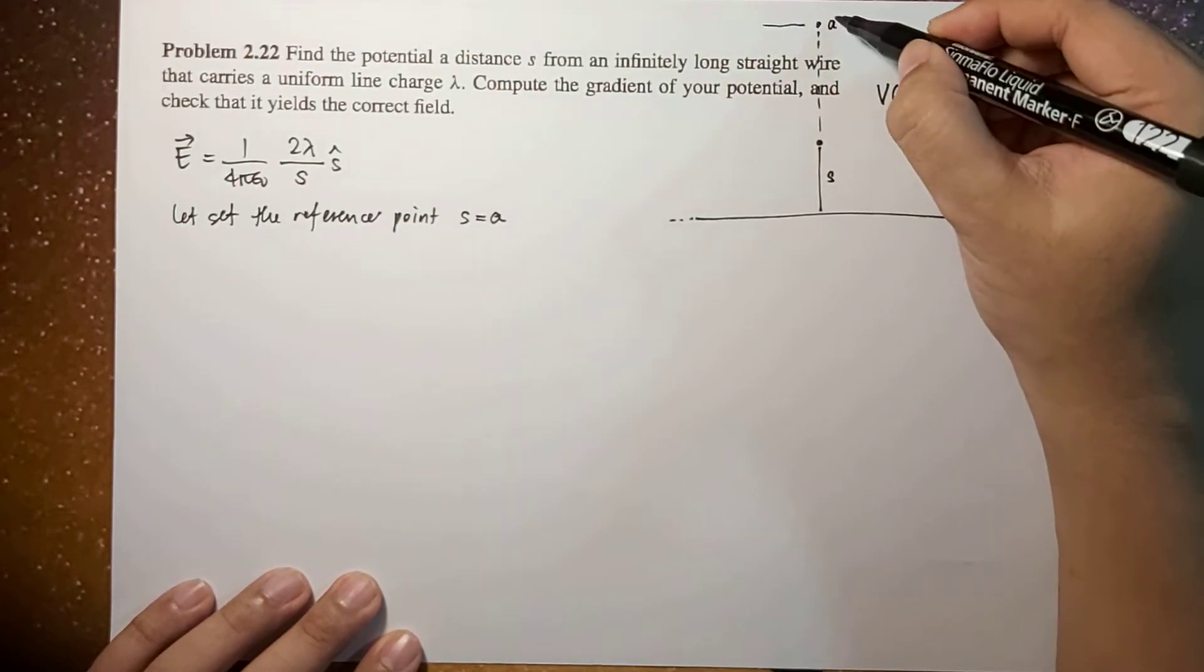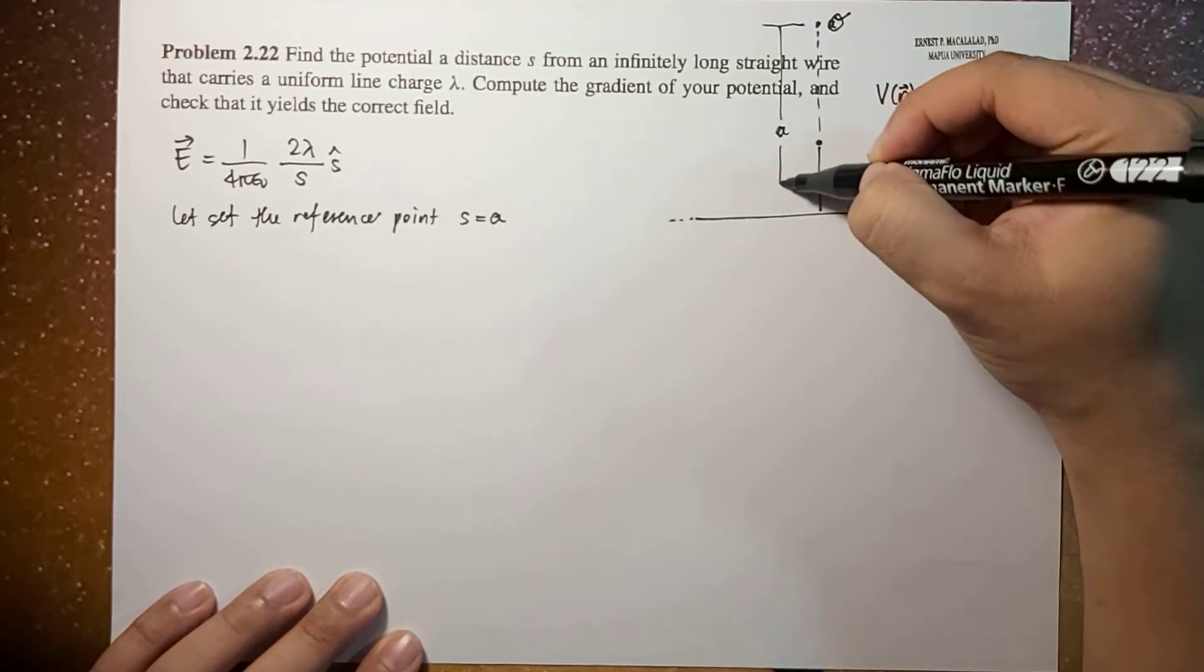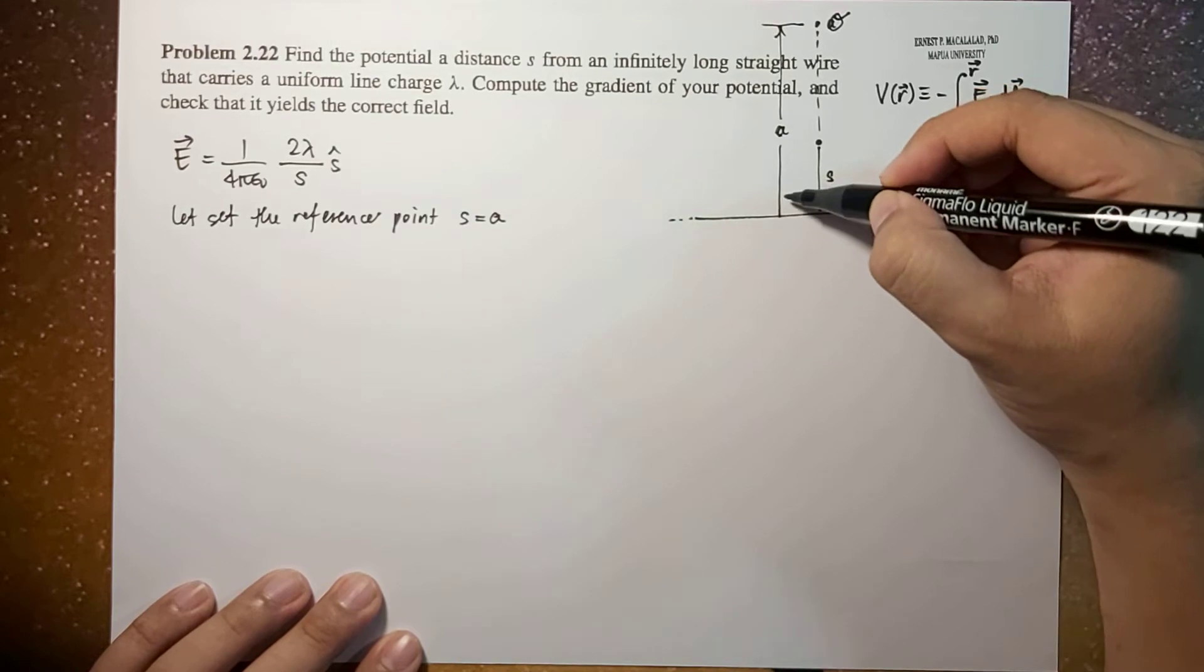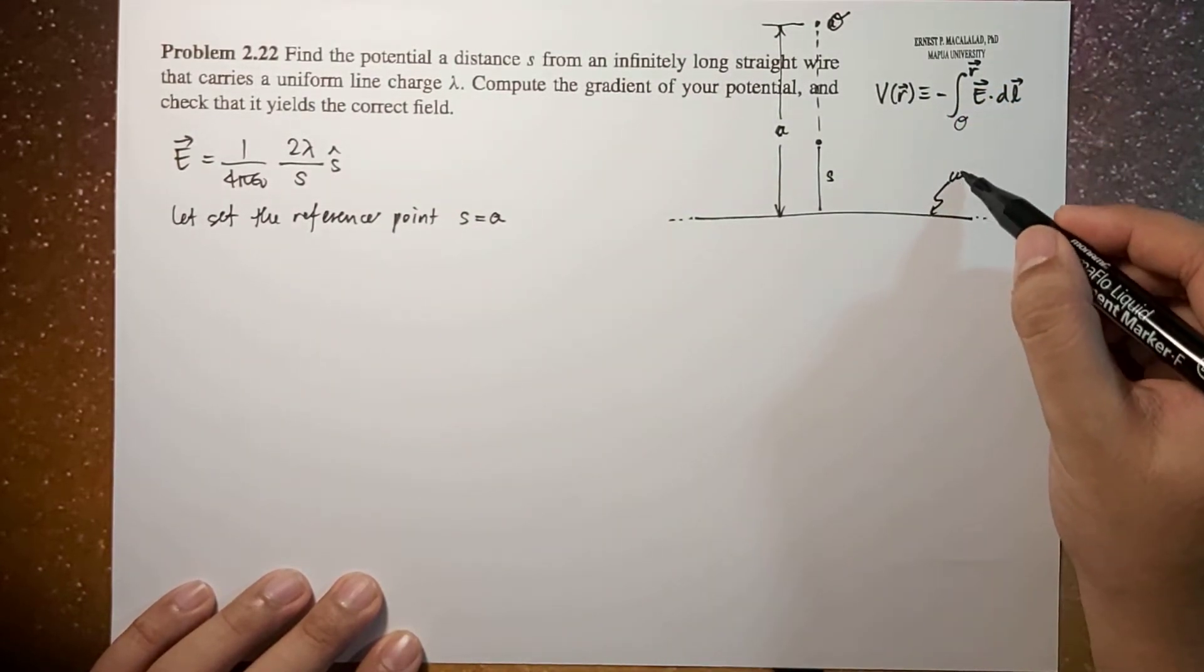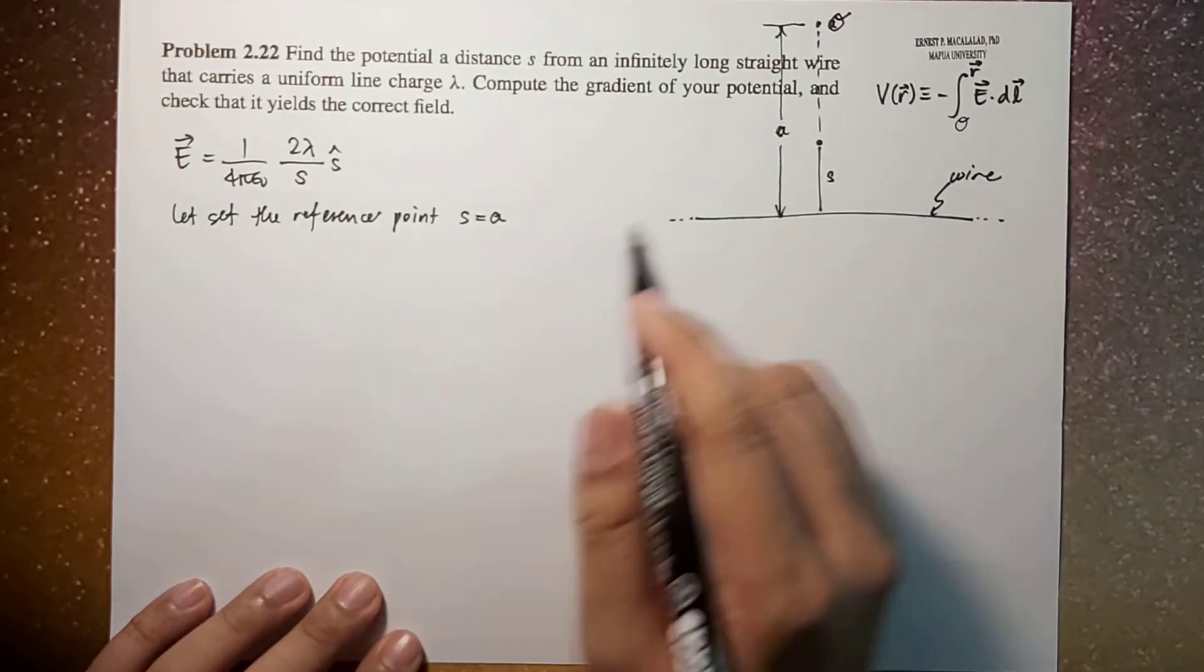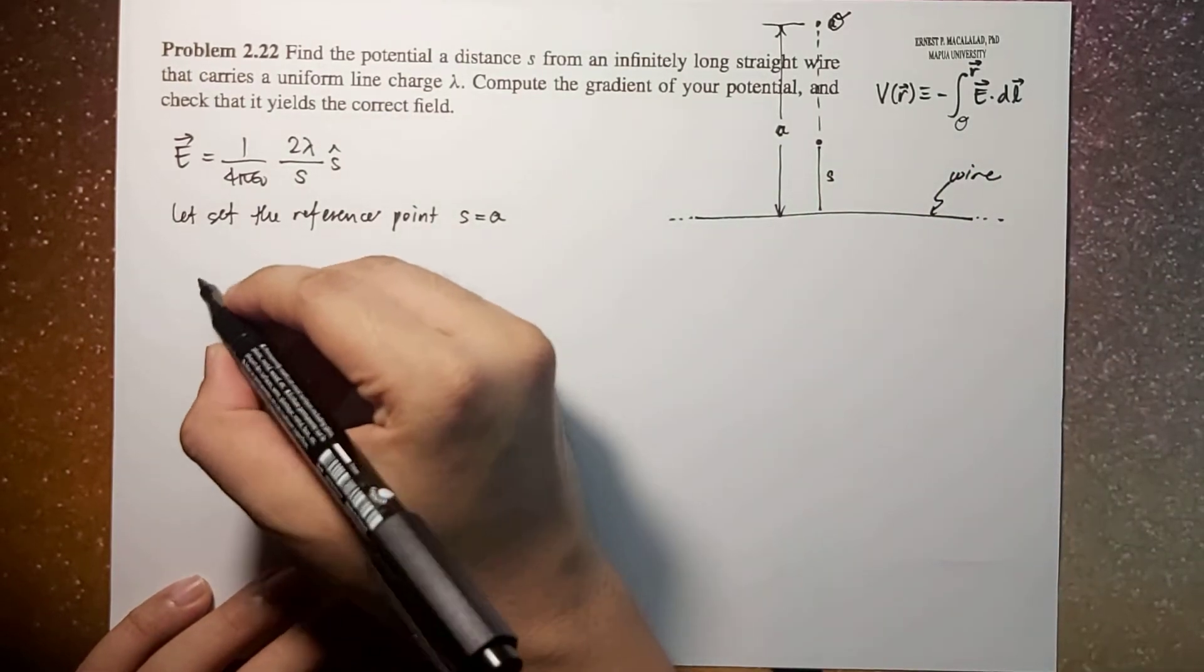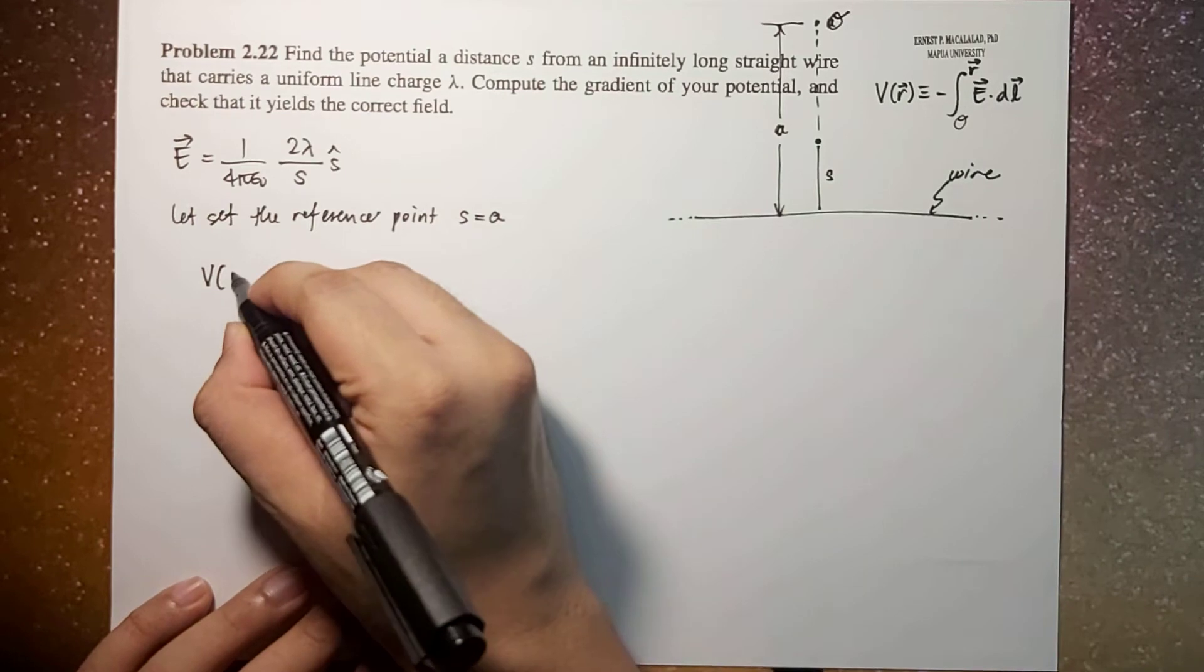So that means this is your reference point and the distance is a from your wire. Remember this is your wire. Now computing for the potential, so this one s would be the point.